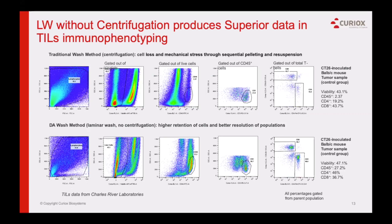The following examples show optimized methods — every time we work with a customer, we optimize to their specific protocols. In this case, I'm going to show that the method can retain more rare cell populations, particularly cells from tissue samples. The flow rate of dispensing and aspiration can be adjusted to optimize, as we've done here. We're showing improved immunophenotyping data for tumor infiltrating lymphocytes, with higher retention and better resolution of the populations. This work was done by a very large CRO.